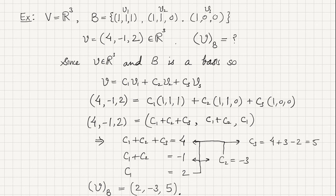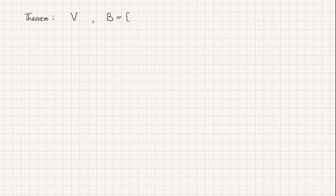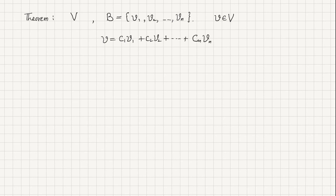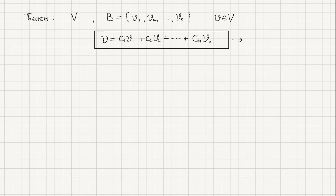Now let me discuss an important theorem for the basis. Suppose you have any vector space V and a basis B is given. If we take any element V in the vector space V, then that element can be expressed as the linear combination of the elements of the basis, where C1, C2, ..., Cn are scalars. The important thing is that this representation of vector V is unique — meaning every vector V can be written in one and only one way, so their coordinates will be the same.